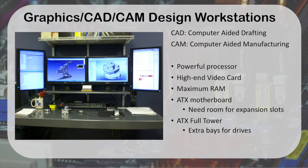The first one we're going to talk about is a graphics workstation — a CAD or CAM design workstation. CAD refers to computer-aided drafting or computer-aided design. This is usually done to create something like building plans, the way an architect would design a house. CAM, on the other hand, is computer-aided manufacturing, where we design something to be printed with a 3D printer or fabricated in a machine shop. For these types of machines, you have to have a very powerful processor because you're doing a lot of detailed 3D graphical work.